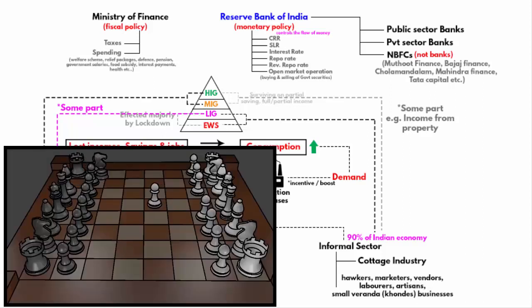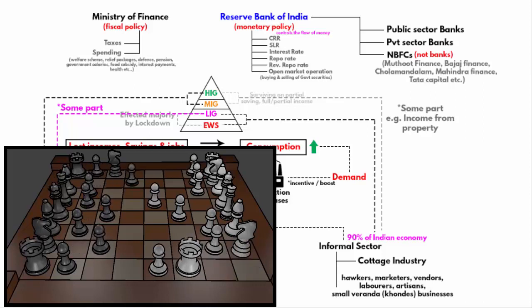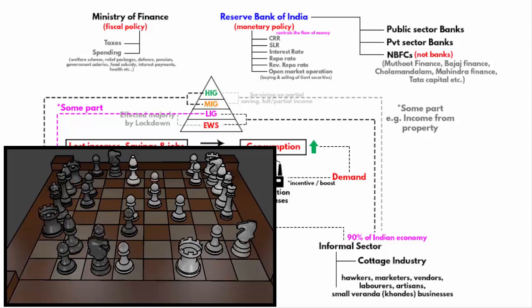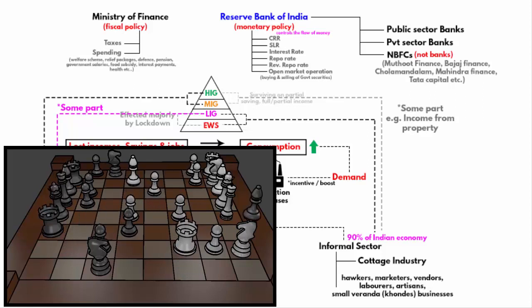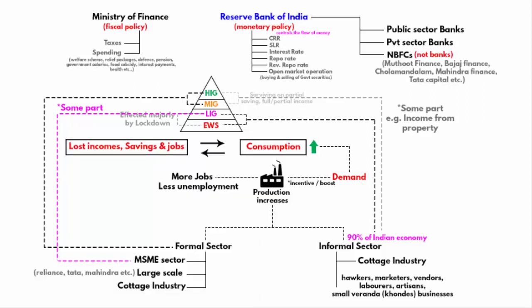Economy is a lot like the game of chess — you move different pieces to reach your objective. The only difference is, in the real game of chess you play to checkmate the king, but in the economy you don't have to checkmate anything. You only have to move the pieces so that everything works smoothly. The objective is to stabilize the economy.